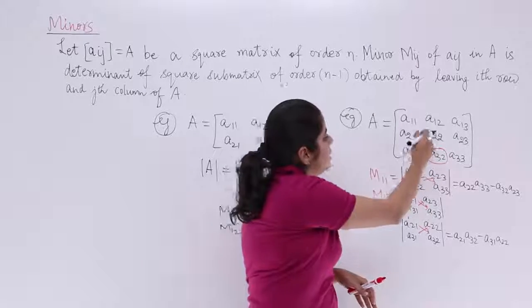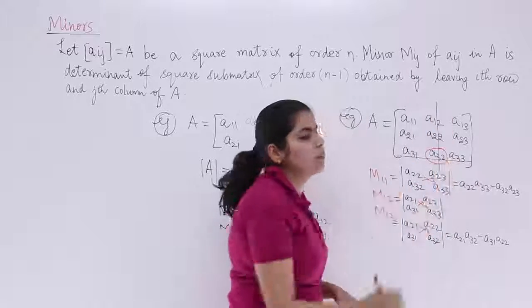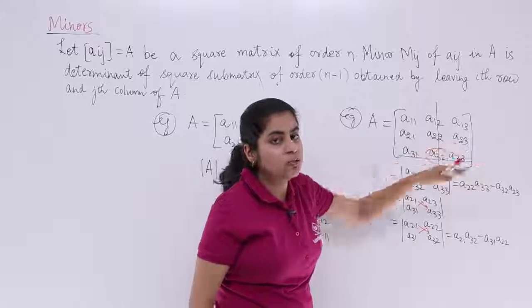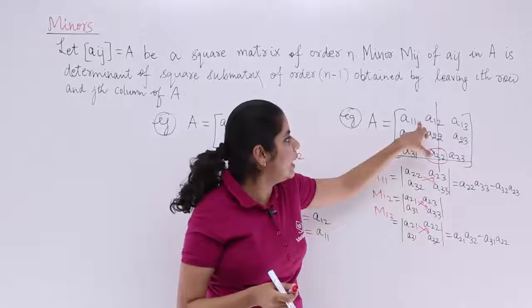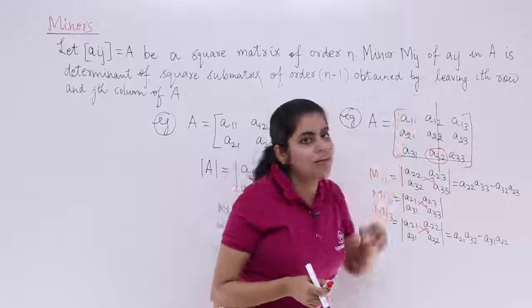M32. I am writing the answer as leaving this row, leaving this column. You are left with what? A11, A13, A21, A23. In a sub-determinant, the answer is what? Cross-multiply. A11, A23 minus A21, A13.